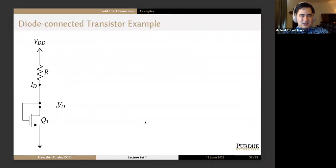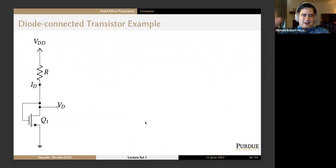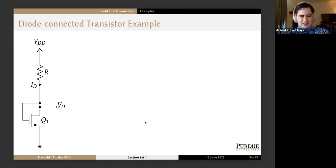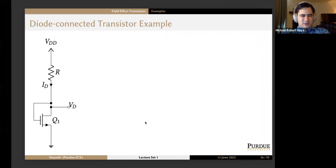At this point we'll work through an example. Normally I try to write these out in real time in my handwriting to pace myself. However, I just couldn't get my touchscreen to cooperate enough to make legible handwriting. So I went with the option of taking photos of my handwritten notes, and I'll just talk through them.